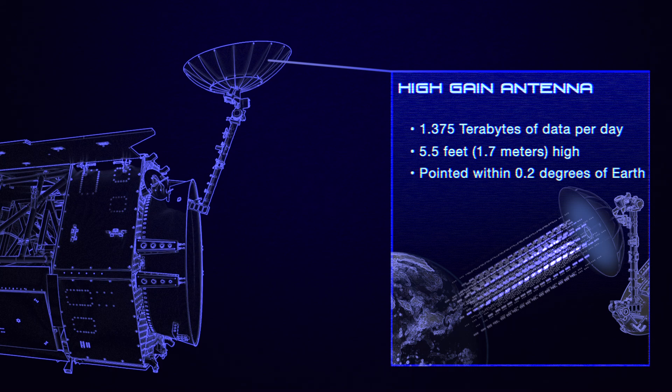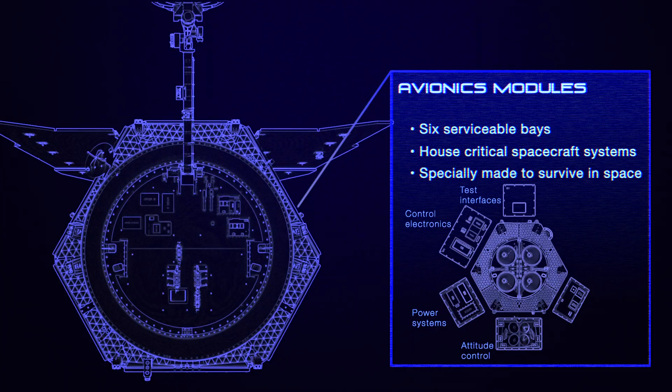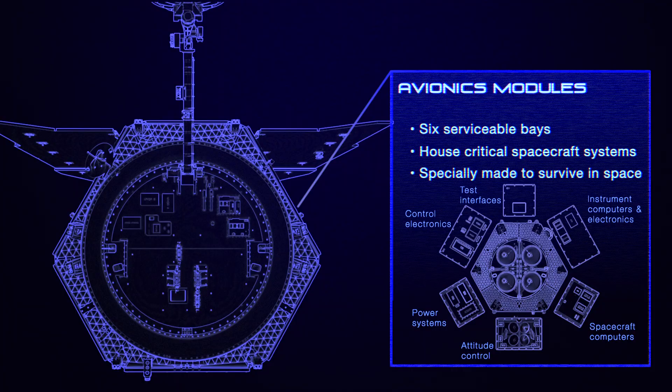Roman's critical systems, such as power and data handling, are located in six modules at the spacecraft's rear. These include six rotating reaction wheels that control where the spacecraft points, nearly one ton of propellant for larger movements, and a 10-terabyte data recorder.